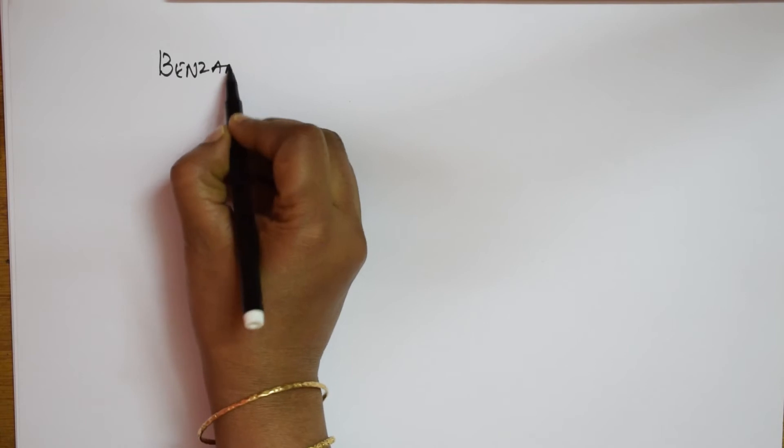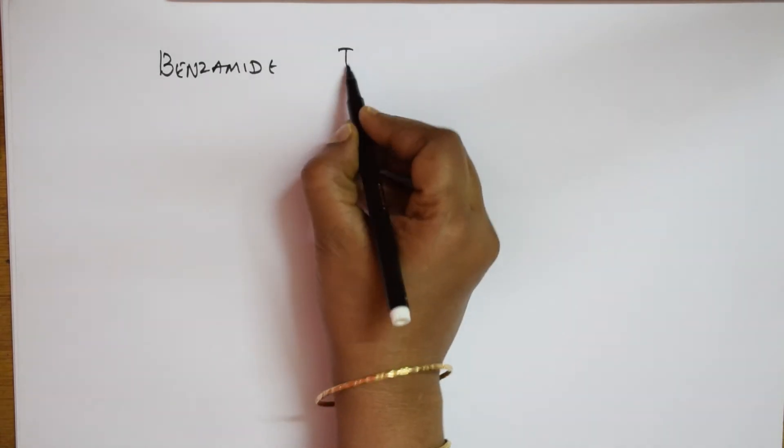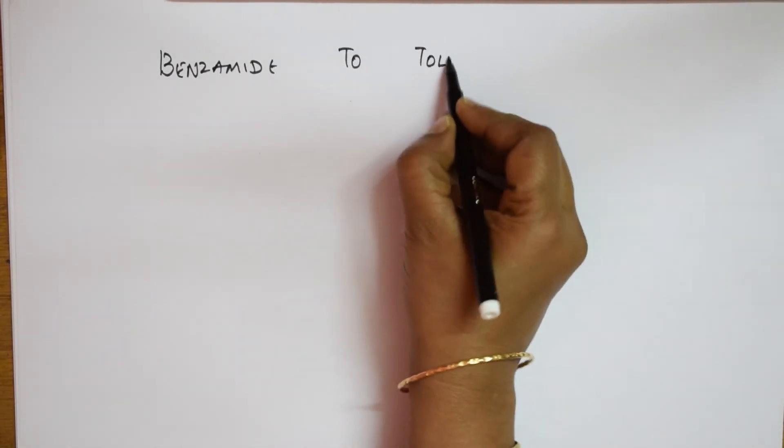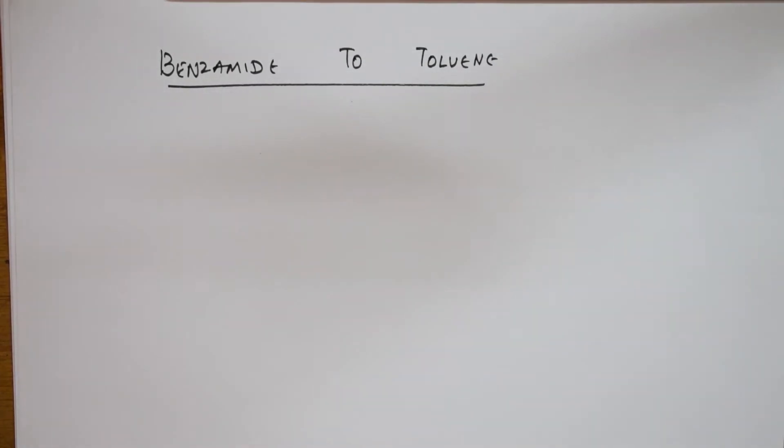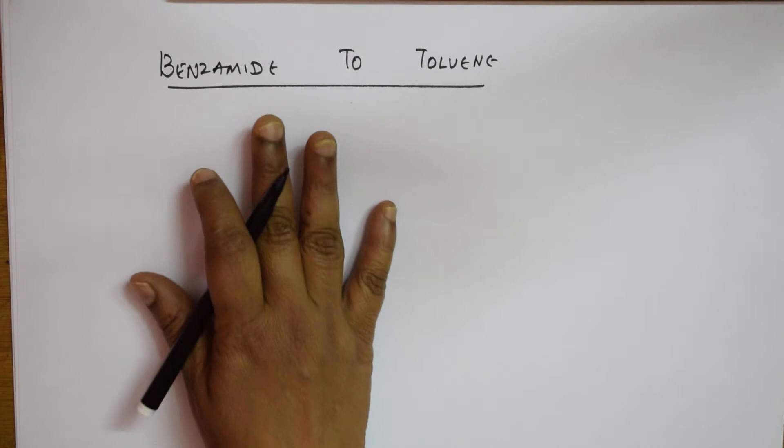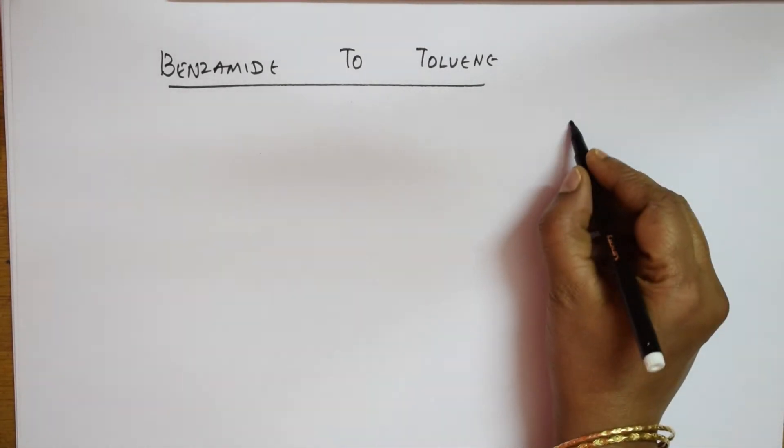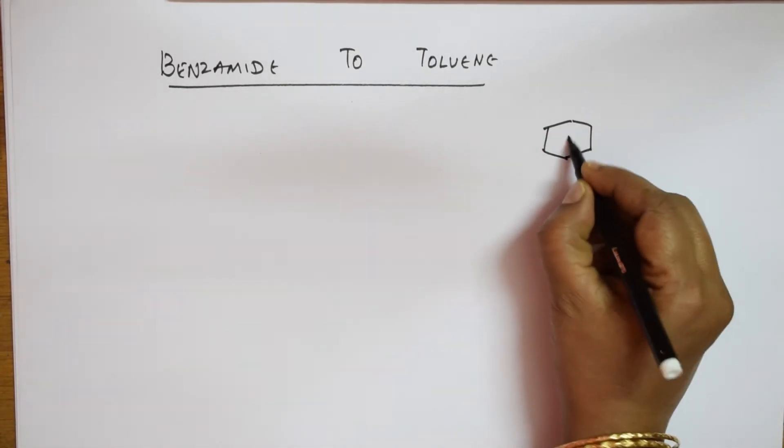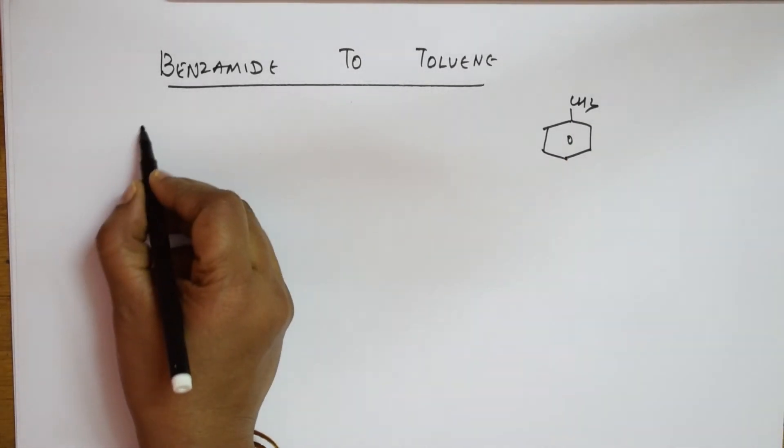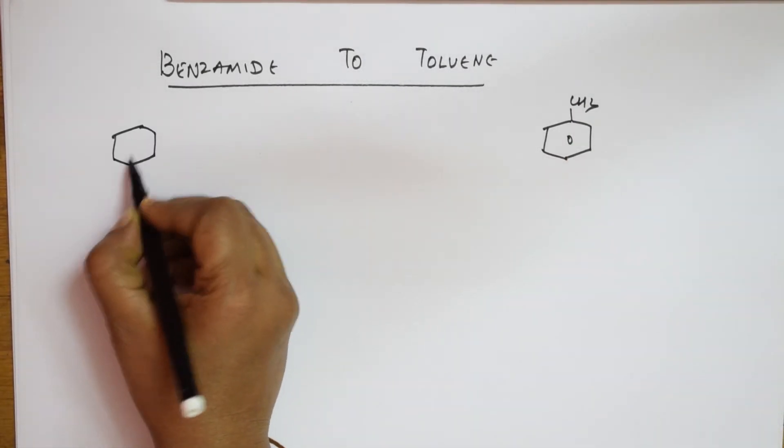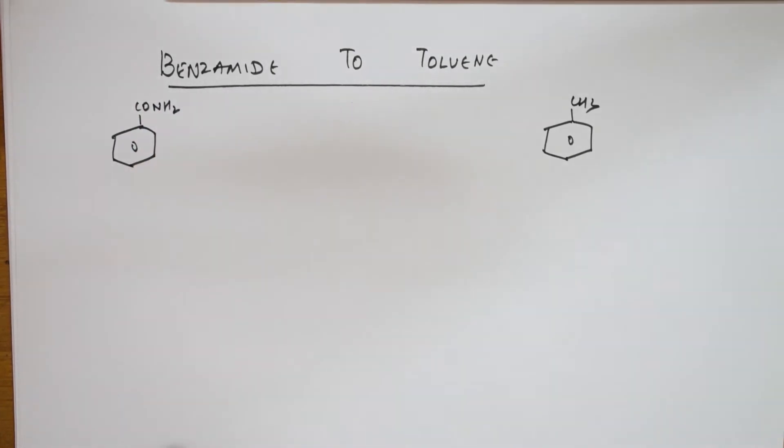Benzamide to toluene - this is the reaction left. I've done benzene reactions, benzoic acid reactions, benzaldehyde reactions. Now let's write the formulas. Toluene has a benzene ring with CH3. Benzamide has a benzene ring with CO-NH2. I have to convert this to this.